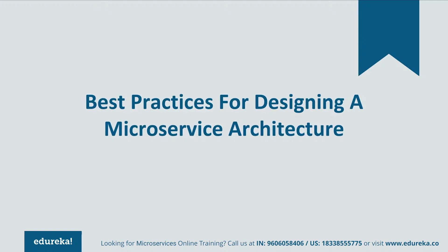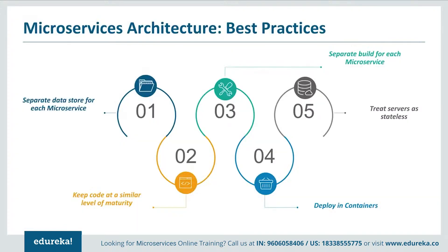Now that we've seen the real-life use case of Uber, let's look at the best practices to design microservices. First, separate the data store for each microservice. Then, keep the code at a similar level of maturity. Next, separately build each microservice according to its respective features and deploy into containers. Lastly, create the servers as stateless for communication.